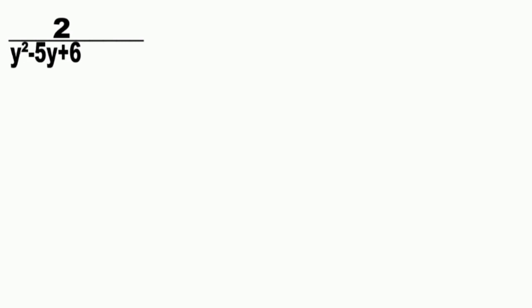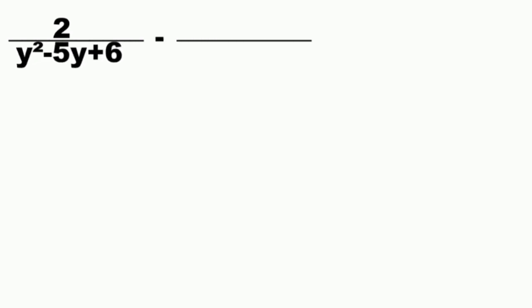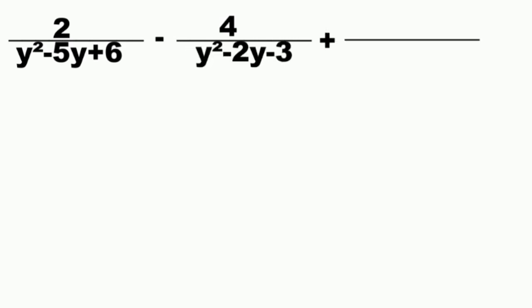Let us have another example of addition and subtraction of rational expressions: 2 over y squared minus 5y plus 6, minus 4 over y squared minus 2y minus 3, plus 2 over y squared plus 4y plus 3.